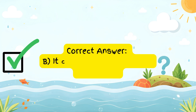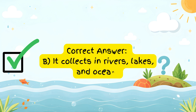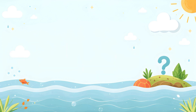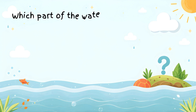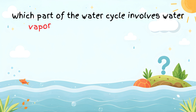Correct answer: it collects in rivers, lakes, and oceans. Condensation is when water vapor cools down and becomes liquid again, forming clouds. Which part of the water cycle involves water vapor cooling down to form clouds?